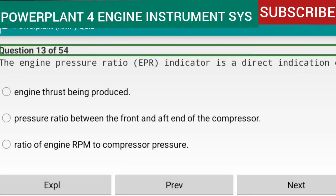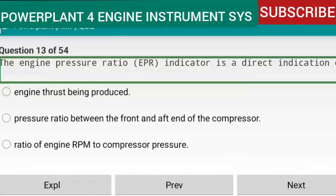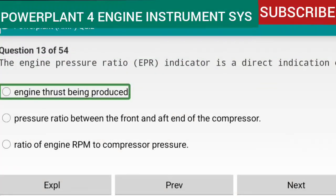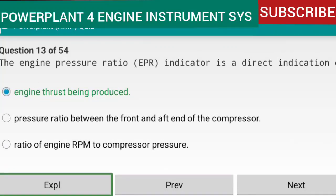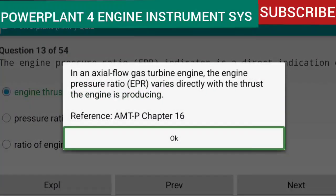Question 13 of 54: The engine pressure ratio (EPR) indicator is a direct indication of engine thrust being produced. In an axial-flow gas turbine engine, EPR varies directly with the thrust the engine is producing. Reference: AMTP Chapter 16.